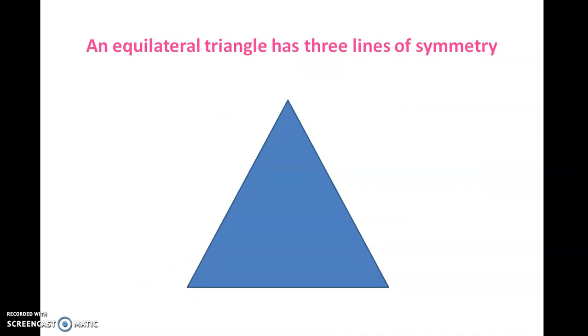An equilateral triangle has 3 lines of symmetry.